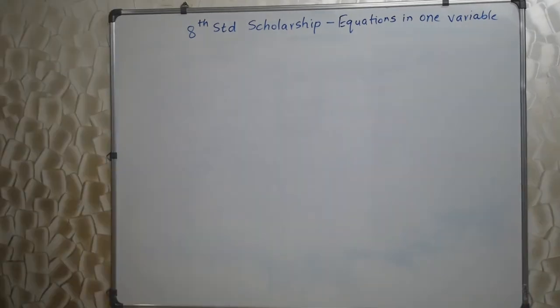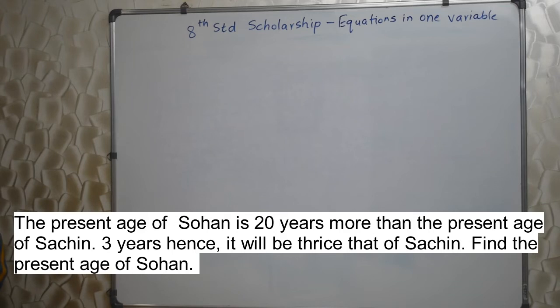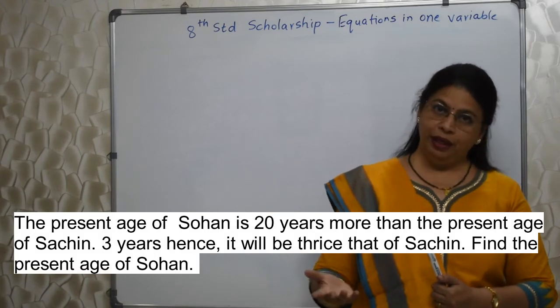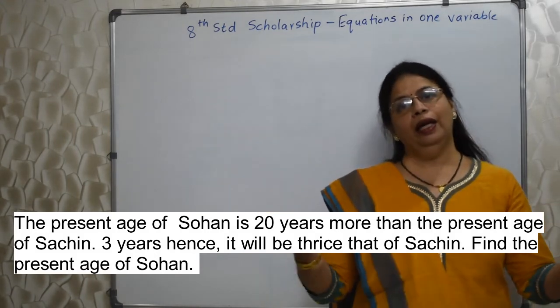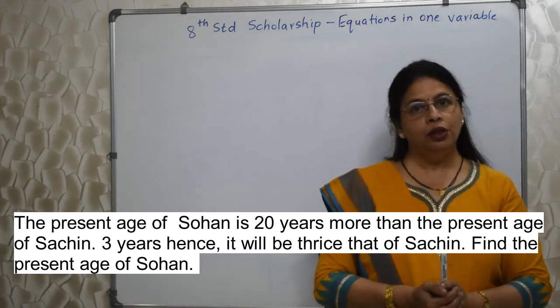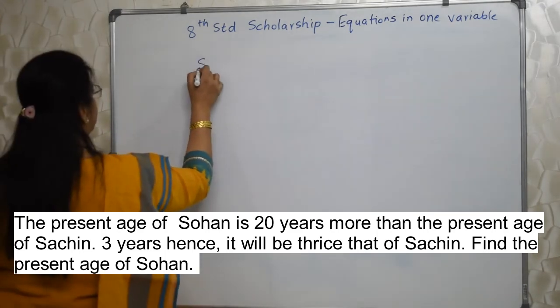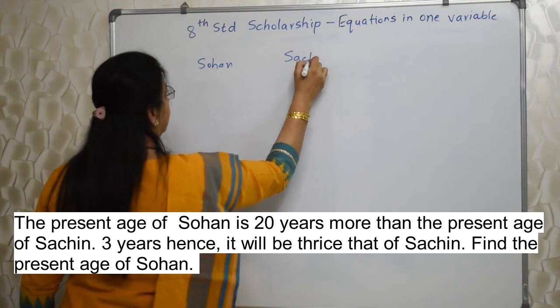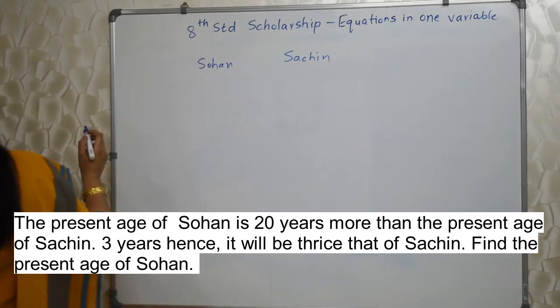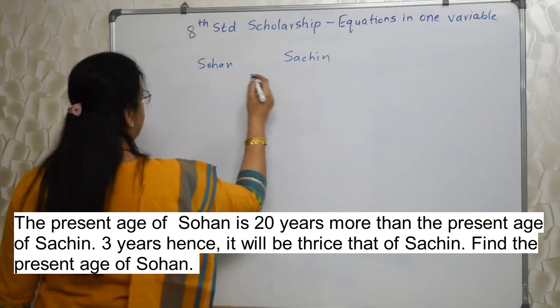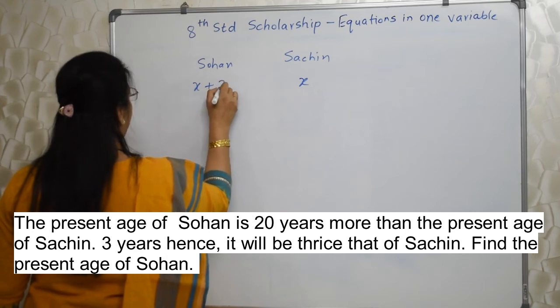Next sum will appear on your screen. The present age of Sohan is 20 years more than the present age of Sachin. 3 years hence it will be thrice that of Sachin. Find the present age of Sohan. Students, again here it is just reading properly and translating it into mathematical language. What are they saying? The present age of Sohan is 20 years more than the present age of Sachin. Unless and until I know Sachin's age, I won't be able to find out Sohan's age. So let's assume this as x. So this is x plus 20.